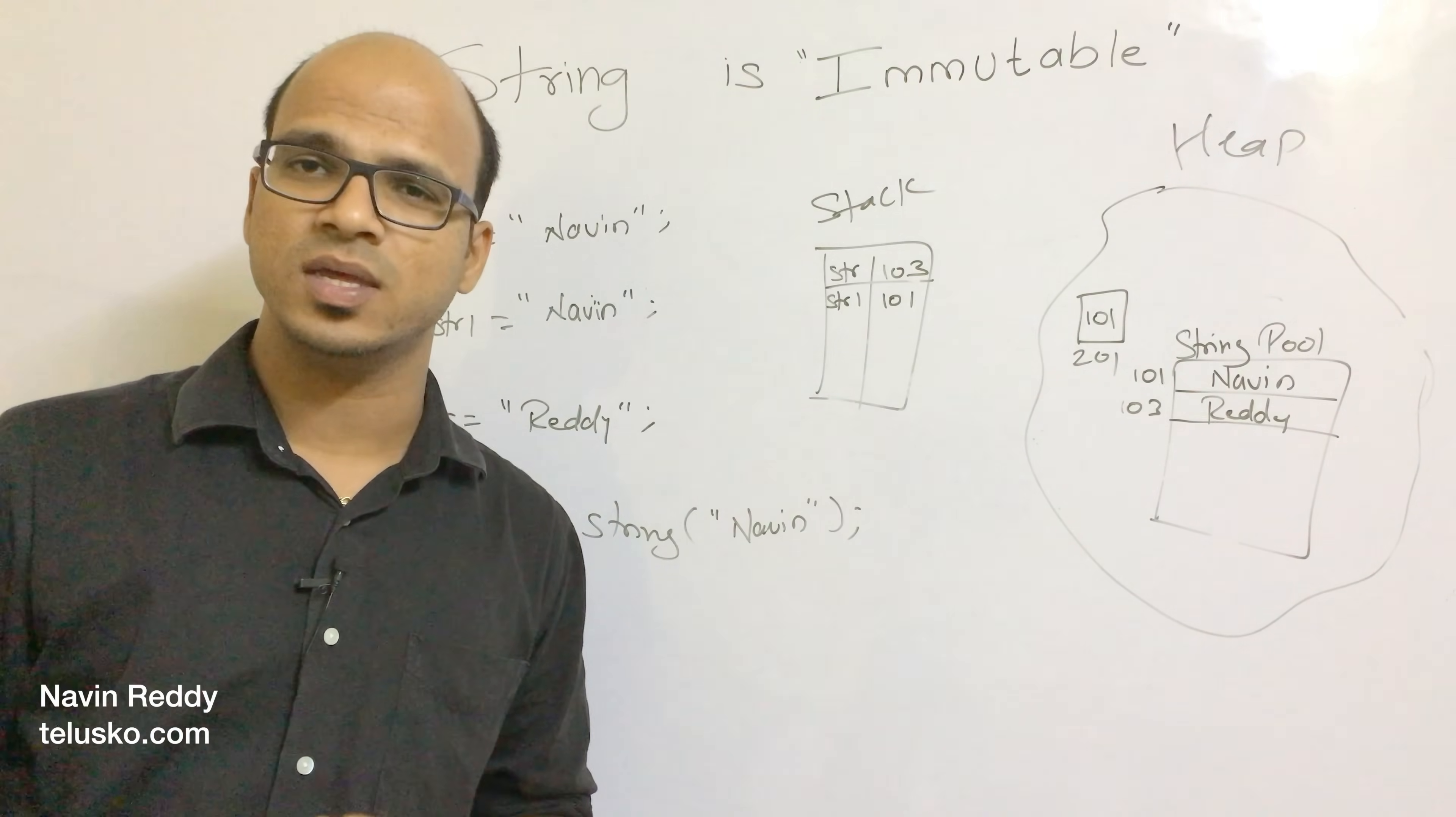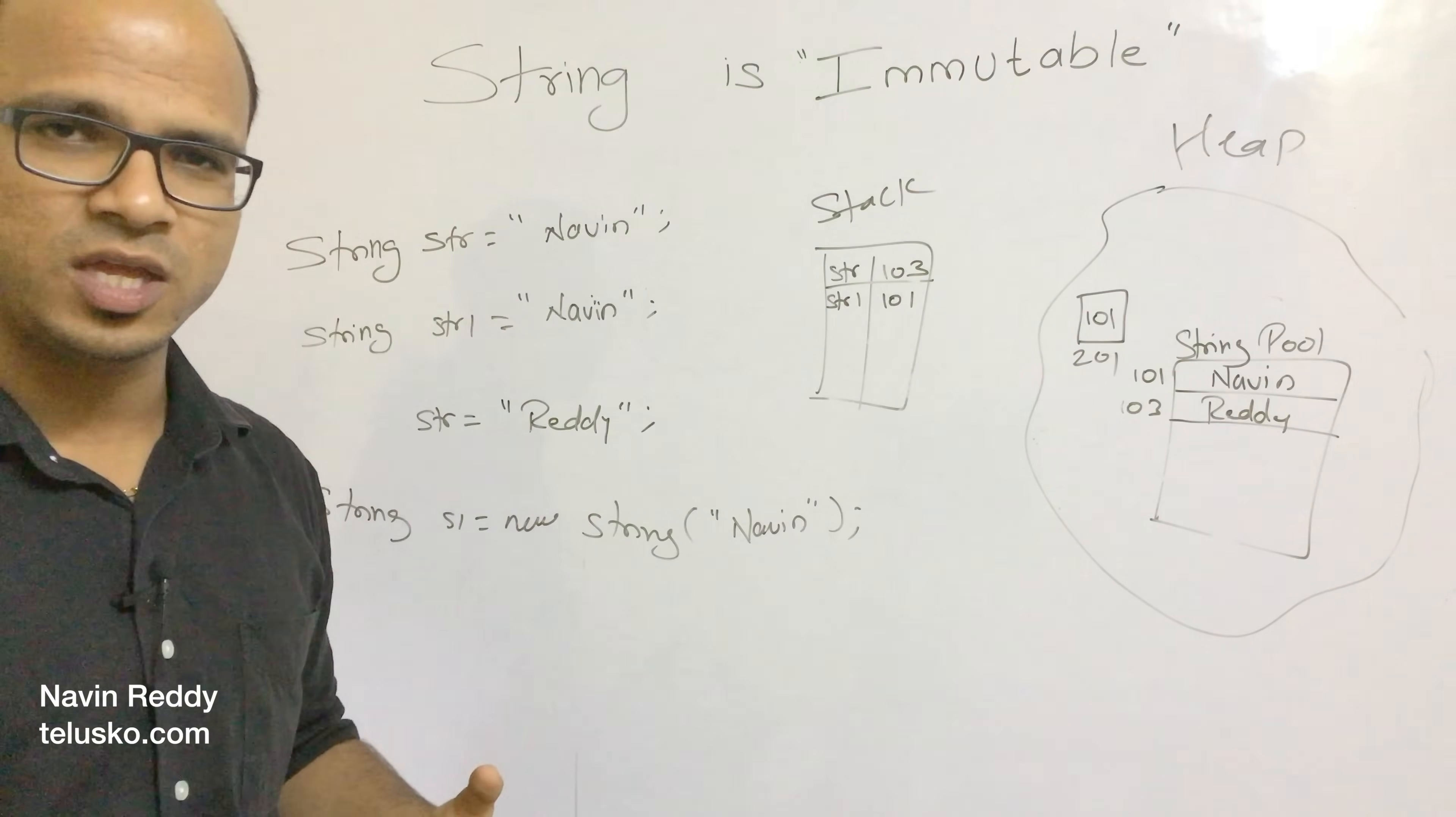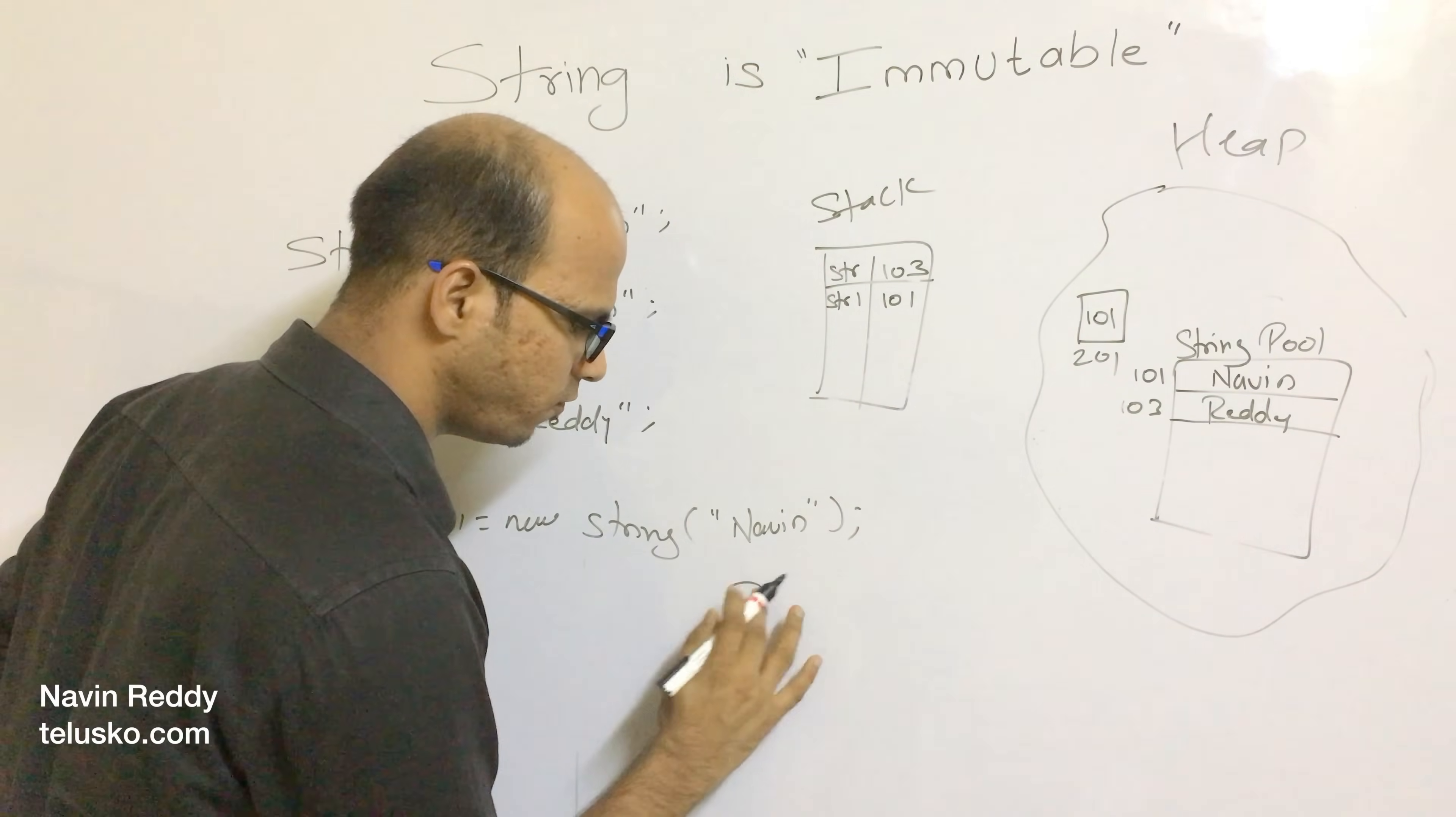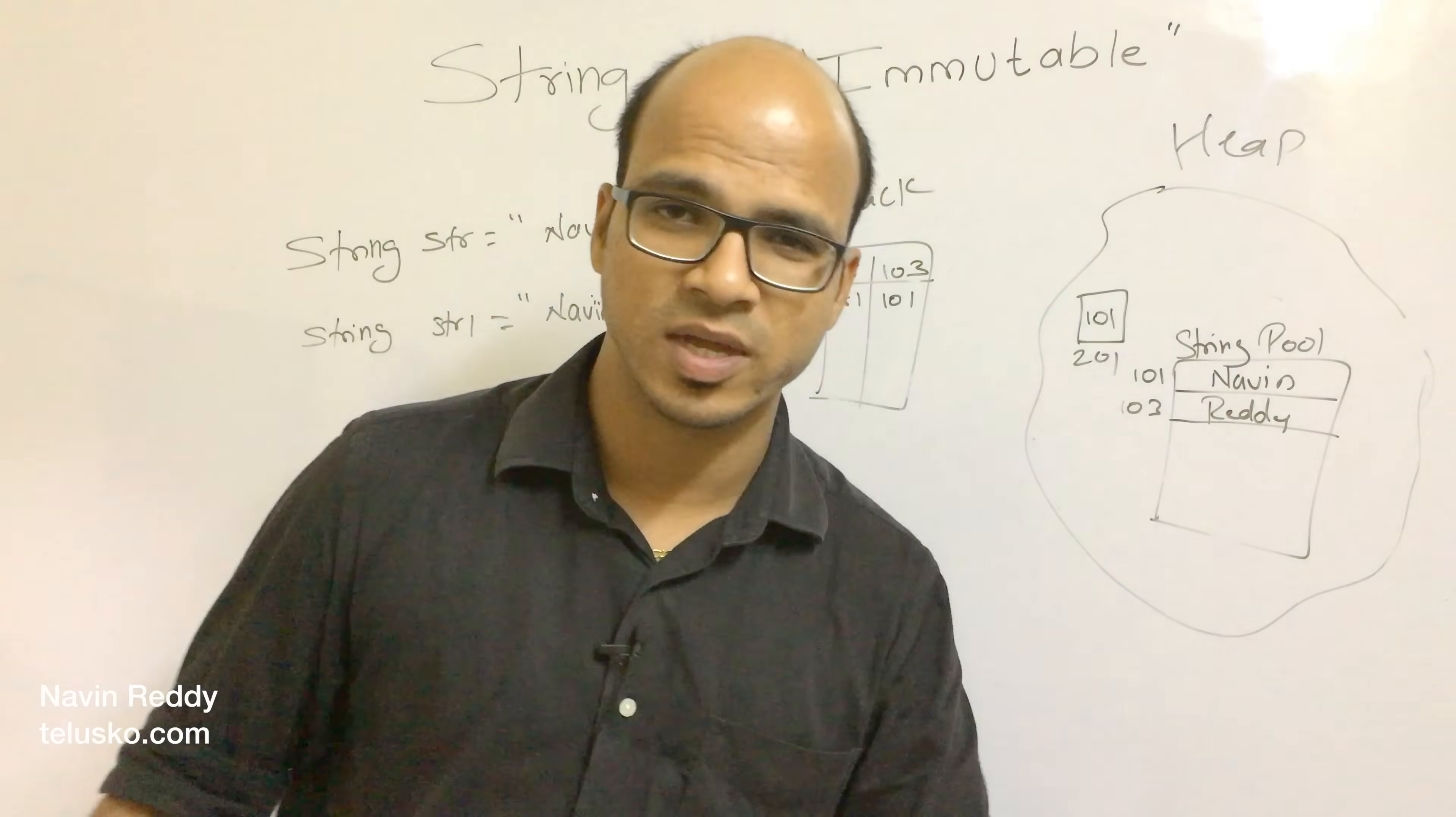Of course we have the practical implementation of those in this series. This is the theory of why string is immutable. First, it increases the performance of the system. Second, two references can share the same object. This is actually called the flyweight pattern. In design patterns, we have a concept of flyweight, which means if possible, we can actually reuse the object - two references using the same object. That's about why string is immutable.